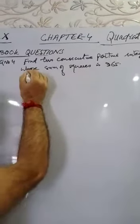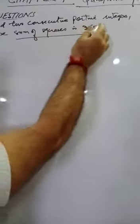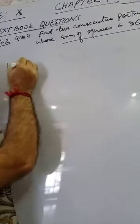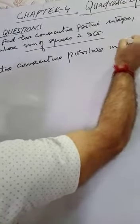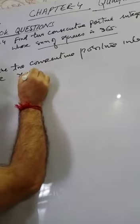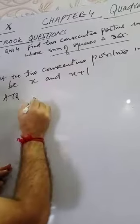Question number 4, Exercise 4.2: Find two consecutive positive integers whose sum of squares is 365. Two consecutive positive integers — consecutive means continuously. Let us take one number as x, then the other will be x plus 1.